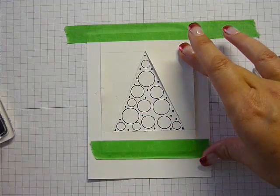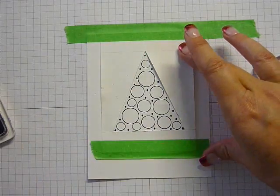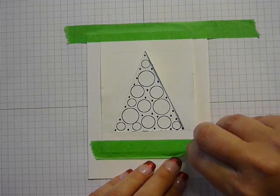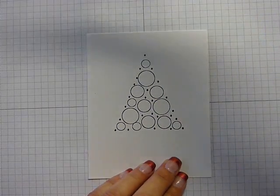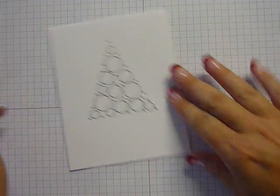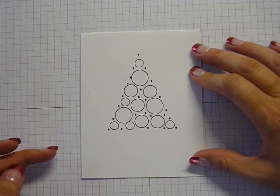Now I've used black here, you can use any color that you like and I've used the outline circles because I'd like to color them in and what I'm going to use today is my Wink of Stellar pens. So it's going to give it some nice glittery shine on the end result.